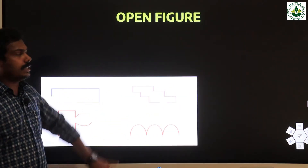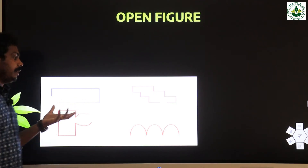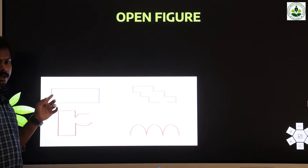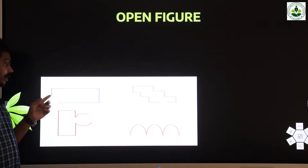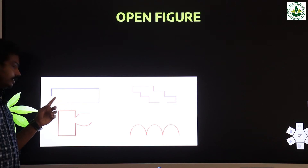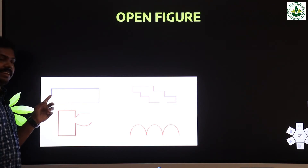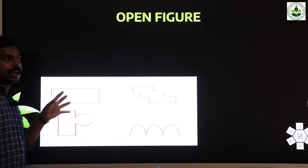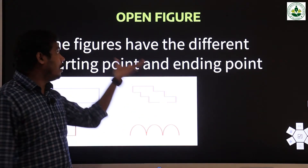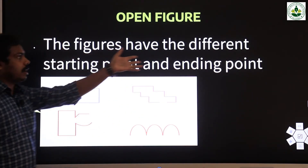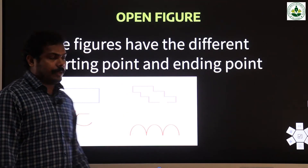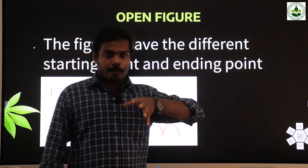We can draw a figure without lifting your pencil and the starting point and ending point are the same — that type of figure is called a closed figure. An open figure means it is open; there is a different starting point and ending point. So it is called an open figure. The figures that have different starting and ending points are called open figures.